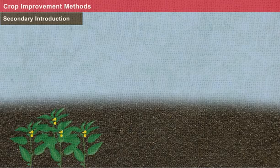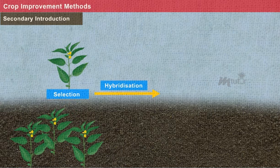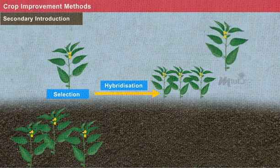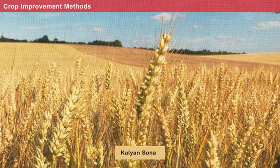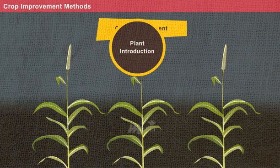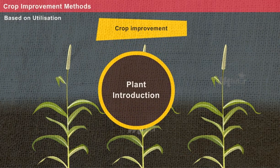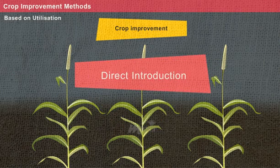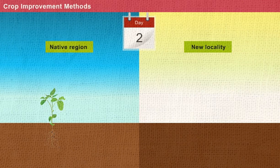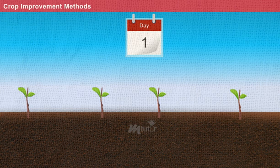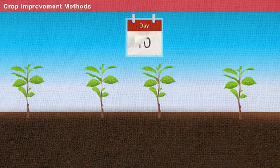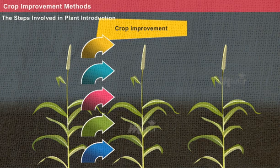Secondary introduction involves the process of selection and hybridization for isolating a superior variety of crop. Example: Sonalica and Kalyan Sona wheat varieties. Further, plant introduction can be categorized into two types based on utilization: direct introduction and indirect introduction. In direct introduction, the crop variety introduced to a new environment does not require time for its establishment. While in indirect introduction, a variety introduced to a new environment requires time for its establishment.